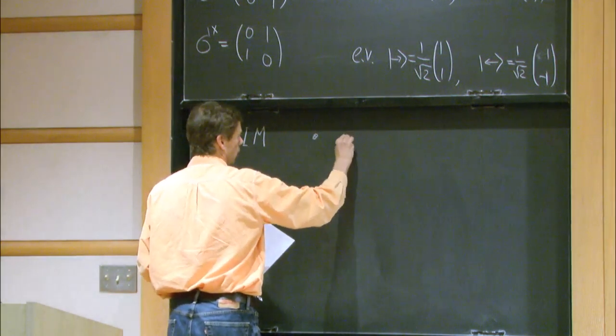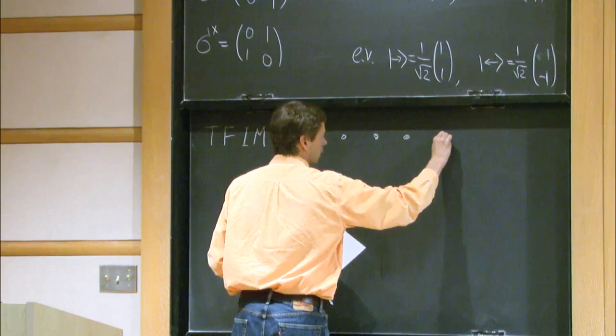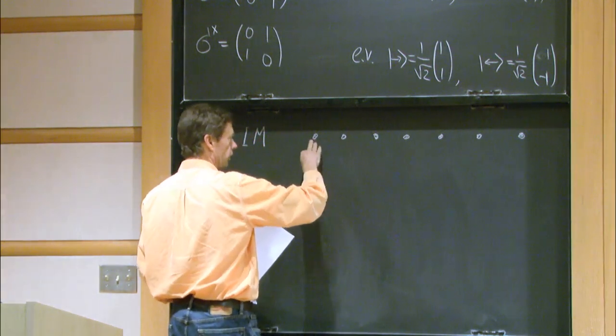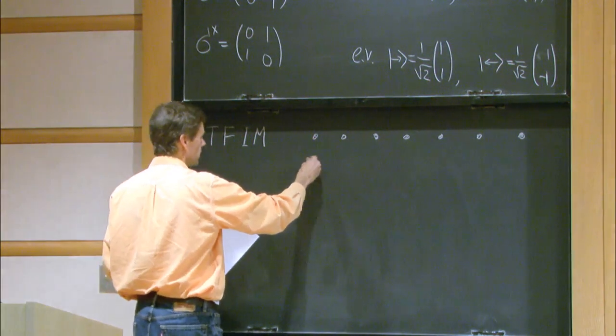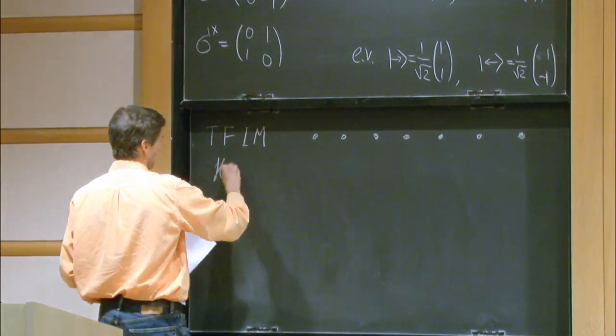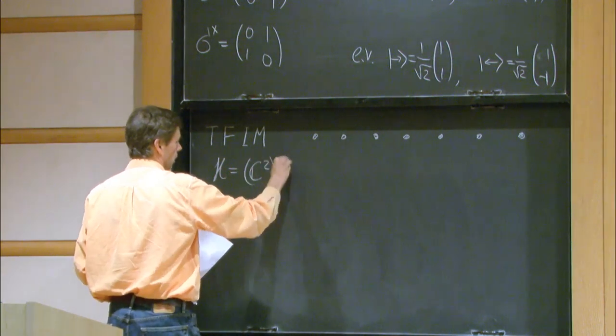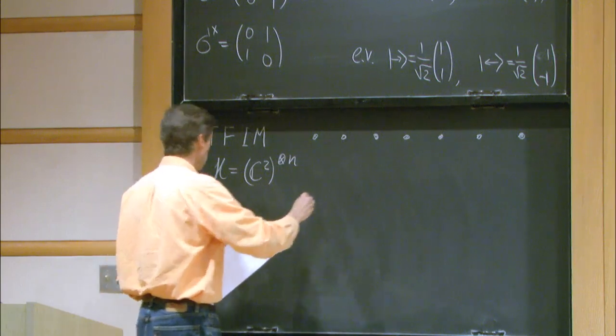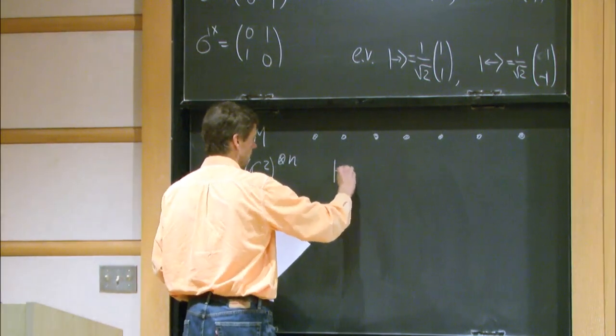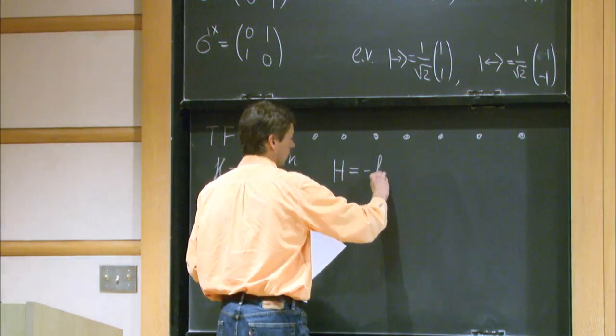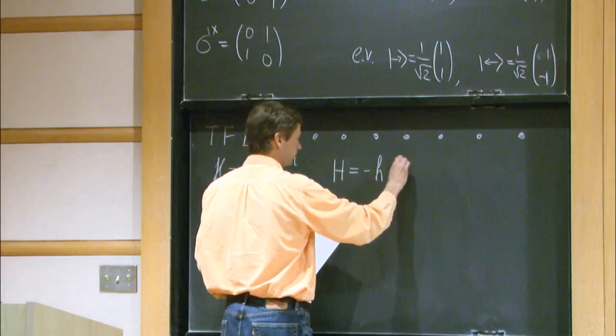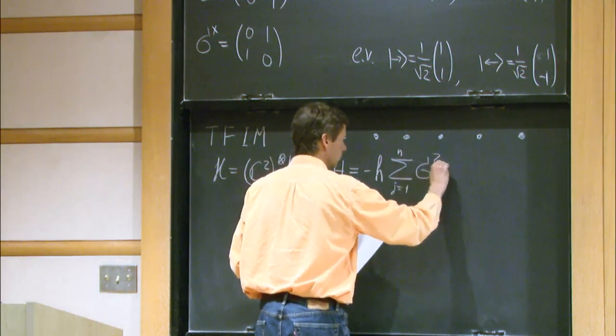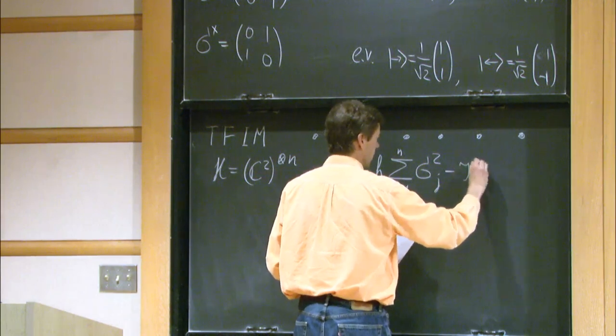It's a Hamiltonian on a one-dimensional chain. And one important property is locality. The Hilbert space is the tensor product of Hilbert spaces of individual atoms or spins. In this case, the Hilbert space is C2 raised to the tensor power n. There are n atoms. And the Hamiltonian acts in this Hilbert space. It has two terms with two parameters. H is one parameter. And J is the other parameter.